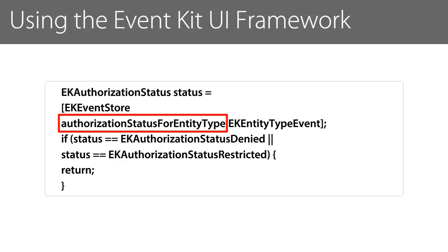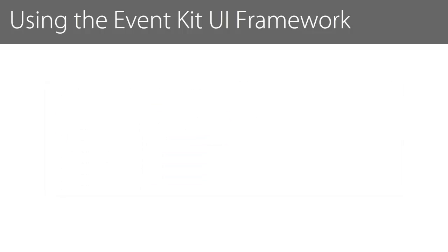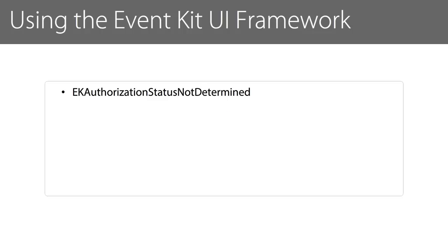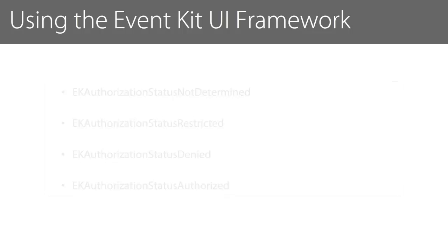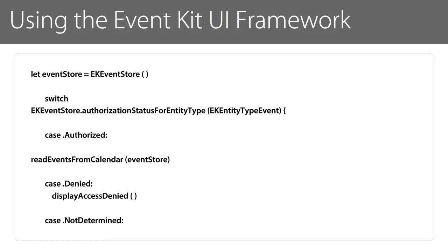The AuthorizationStatusForEntityType method returns one of four constants: EKAuthorizationStatusNotDetermined, EKAuthorizationStatusRestricted, EKAuthorizationStatusDenied, and EKAuthorizationStatusAuthorized. You can set access permission to the calendar database in Swift using this code.